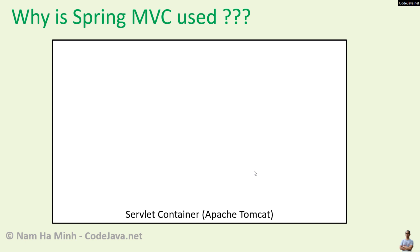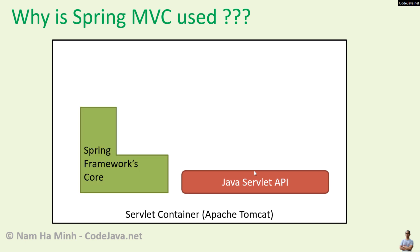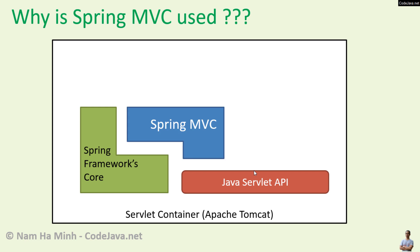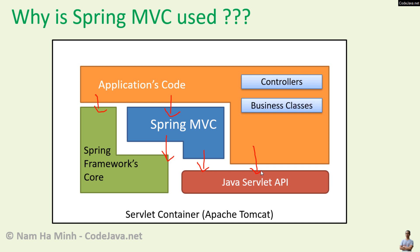Let me show you a picture. A Java web application runs on a servlet container such as Apache Tomcat. At the bottom of the stack is the Java Servlet API and the Spring Framework core. Spring MVC is built on the Spring Framework core and Java Servlet API. The application code is built on Spring Framework core, Spring MVC, and Java Servlet API.